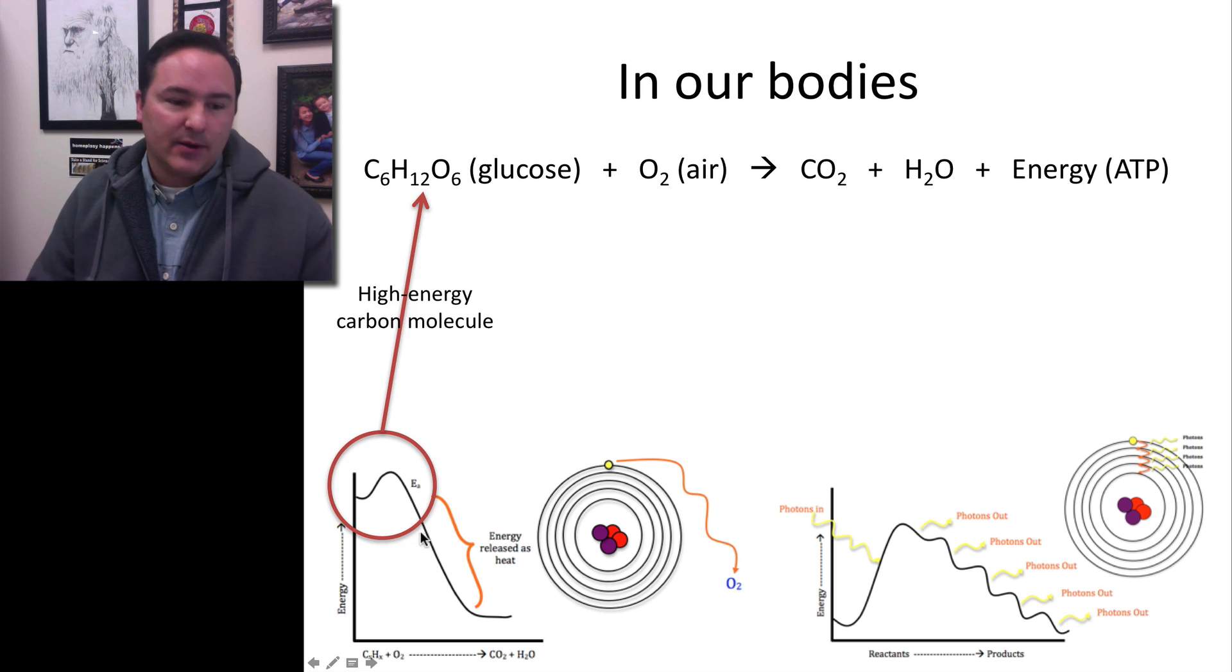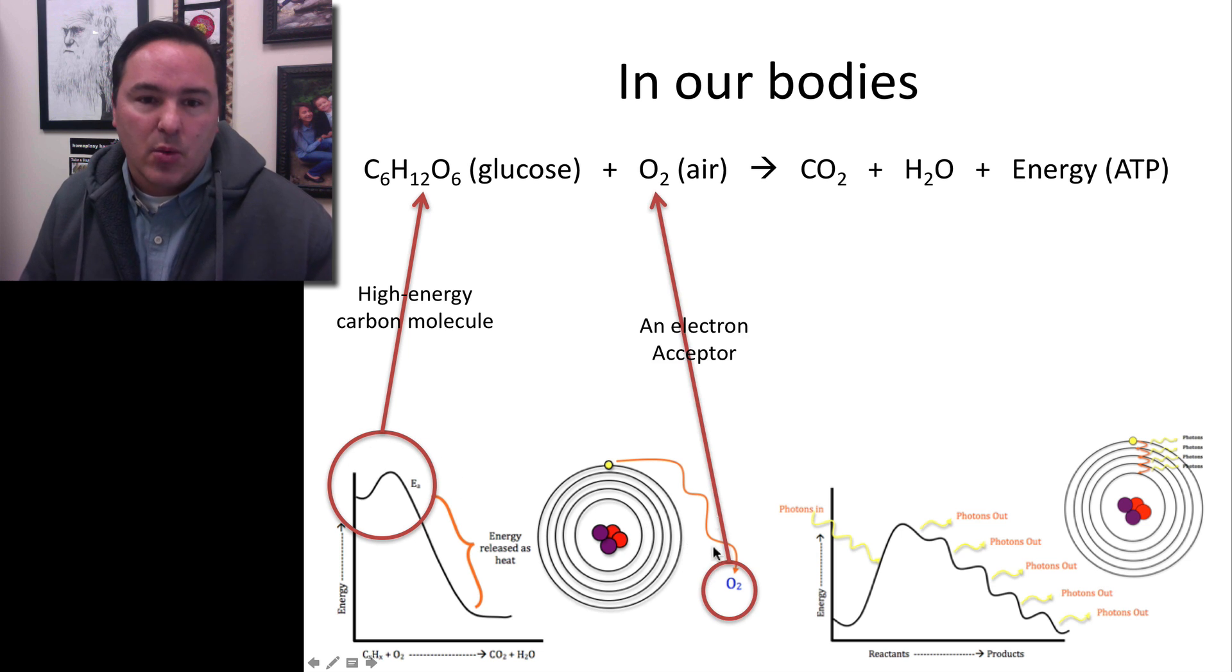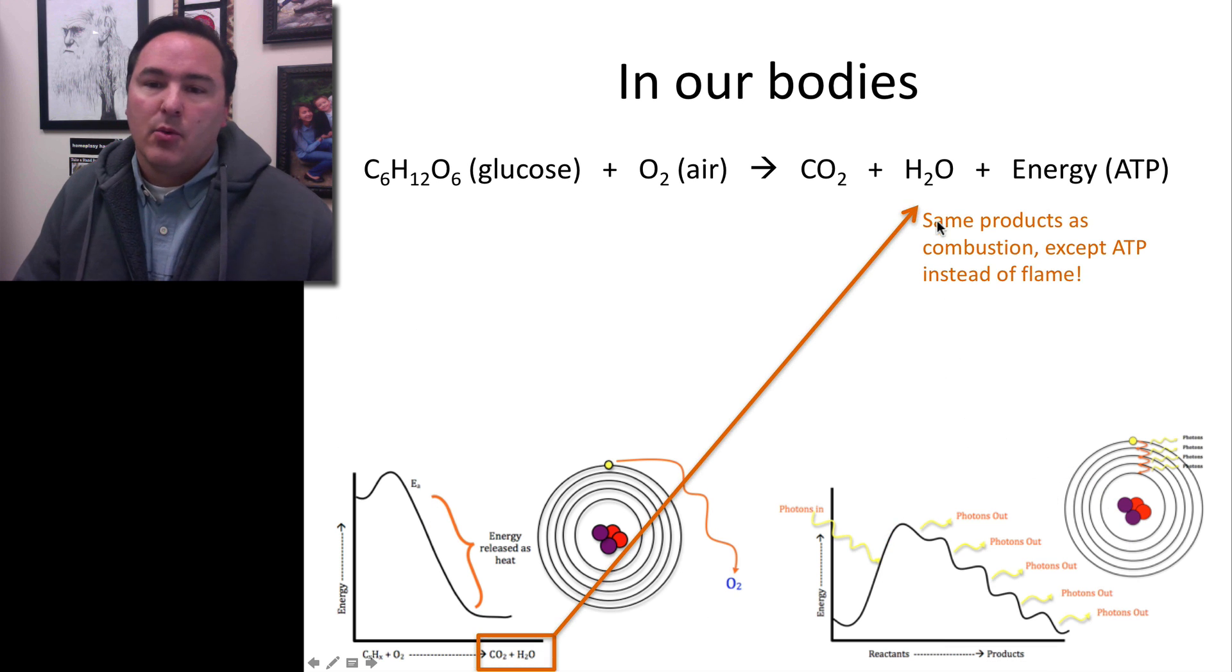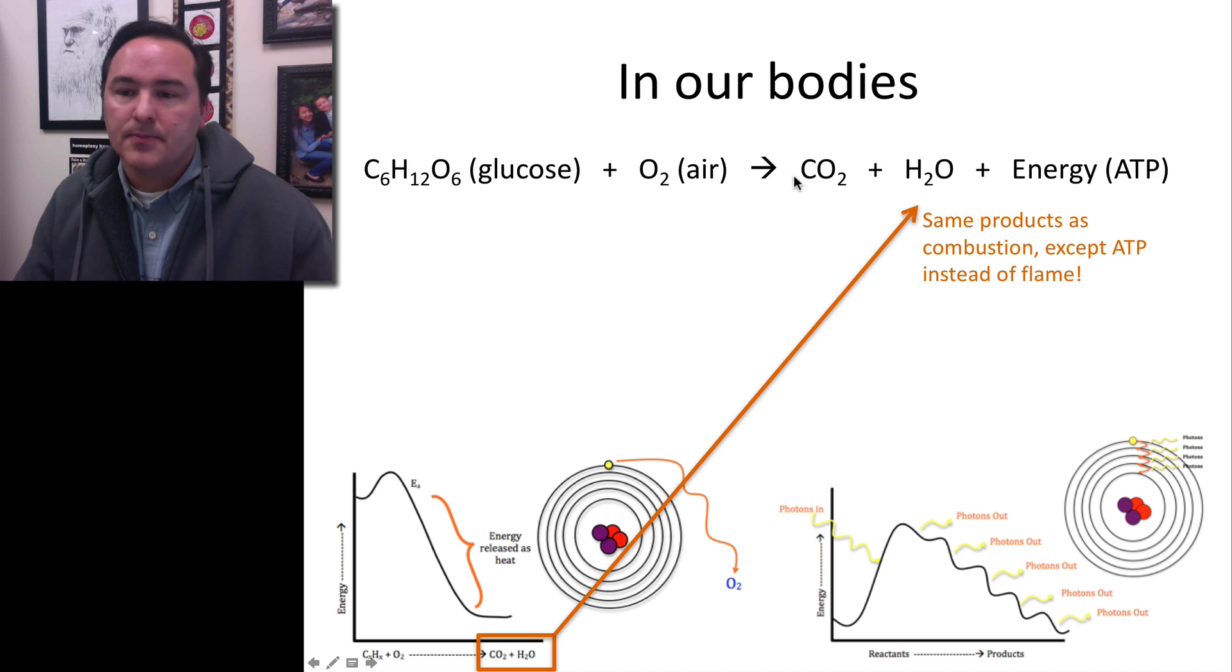Once again, we take the high energy molecule of glucose, we take advantage of air, the electron acceptor. We slowly run this reaction, a little bit at a time. We still end up with the same products of carbon dioxide and water. But instead of making a flame, we simply make ATPs.